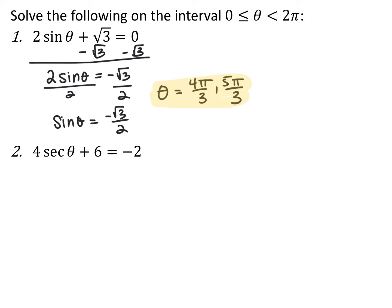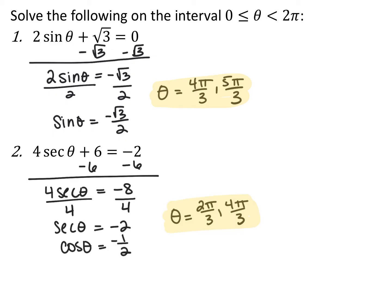Be careful: we were just talking about inverse trig, but this is not inverse trig, so it's not restricted to specific quadrants — we want all angles between zero and two pi where sine equals negative root three over two. For four secant theta plus six equals negative two: isolate secant by subtracting six and dividing by four to get secant equals negative two. Since secant is the reciprocal of cosine, cosine equals negative one half, so theta is two pi over three and four pi over three.